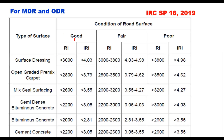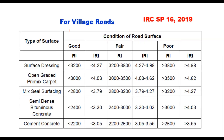For MDR and ODR roads, again three road surface conditions — good, fair, and poor — are specified with different types of surfacing such as surface dressing, OGPC, mixed surfacing, semi-dense bituminous concrete, and cement concrete, along with their RI and IRI limits. A similar table is given for low-category village roads for different surfacing types and for good, fair, and poor road surface conditions. Thank you very much for watching this video — if you have any questions you can write in the comment box.